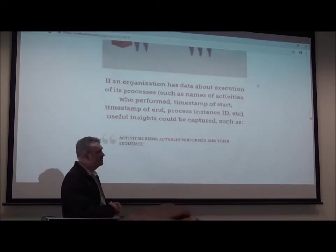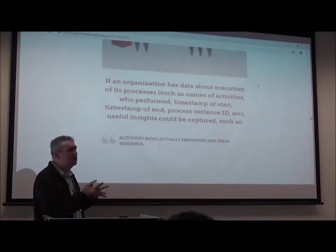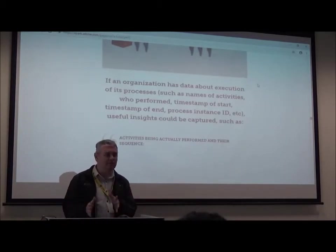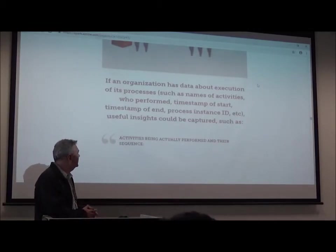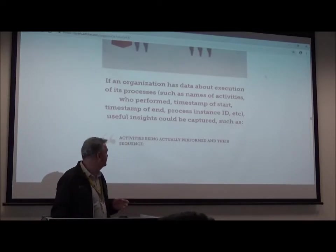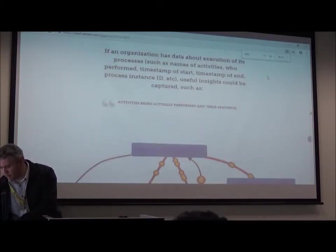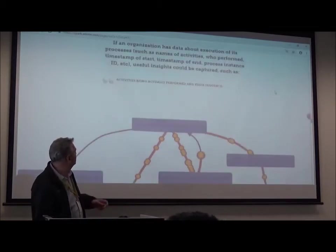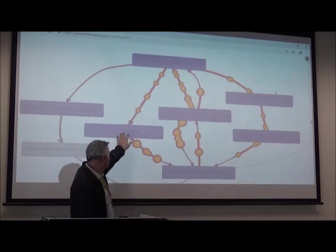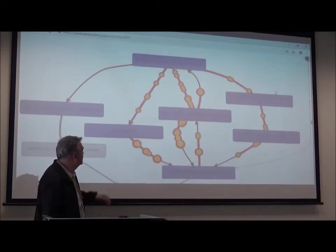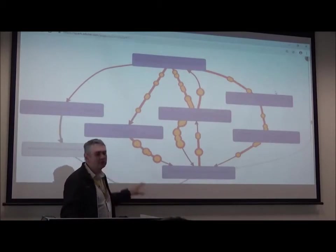If your organization has data about the execution of your process, such as the name of activities, who performed them, the timestamp of the start and end of an activity, you can capture very useful insights. This graph shows a process where you can see the order that activities are being performed, and you can see where the bottlenecks or waiting times are.